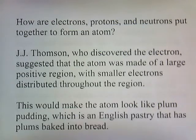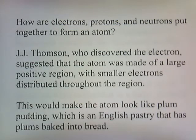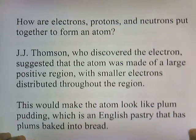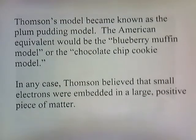J.J. Thompson, who discovered the electron, suggested that the atom was made of a large, positive region with smaller electrons distributed throughout. This would make the atom look like plum pudding, which is an English pastry that has plums baked into bread. Thompson's model became known as the plum pudding model.